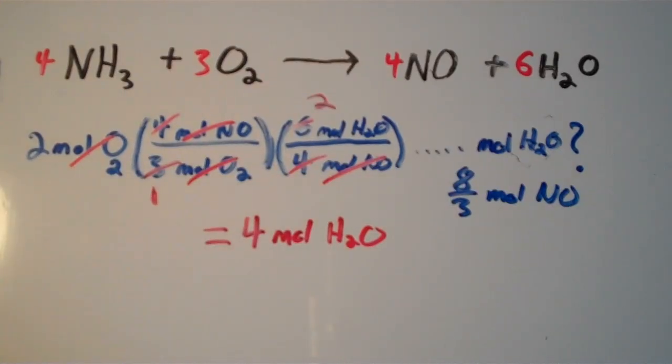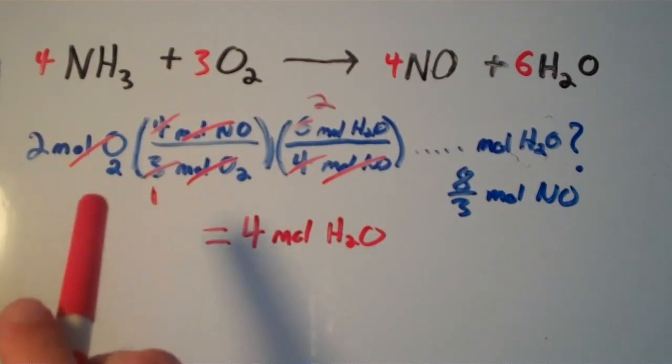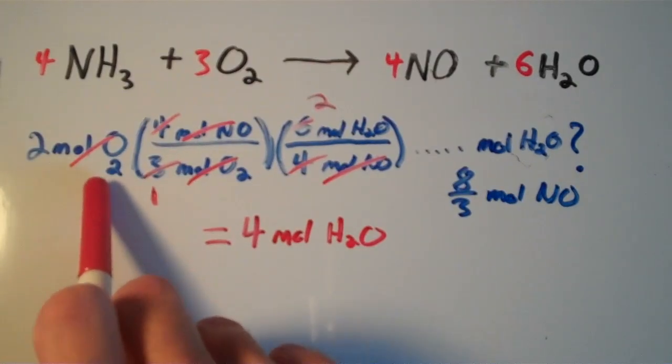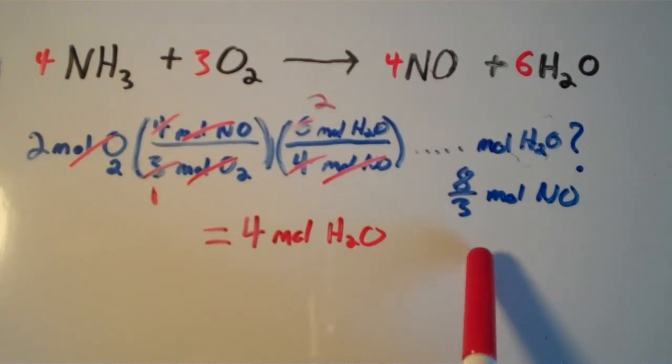So that's how to do mole to mole conversions. First, if your equation is not balanced, you have to balance it. Then you use those coefficients as conversion factors to convert from the unit that you're given in moles to the desired unit in moles.